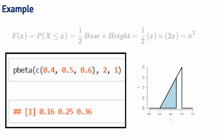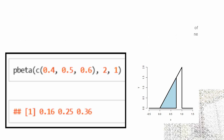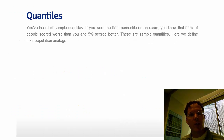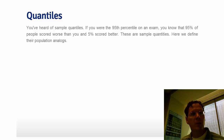In the future, we will work with more complicated density functions, but it will actually be easier because we will just rely on functions like p-norm and p-beta instead of directly computing them. You have already heard of sample quantiles. For example, if you scored at the 95th percentile — the 0.95 quantile — on an exam, 95% of students scored worse than you and 5% scored better. These are so-called sample quantiles, and we are going to define their population analogues.